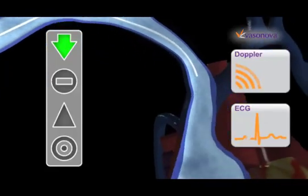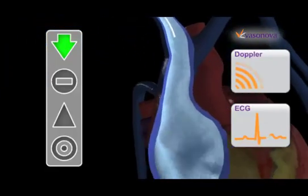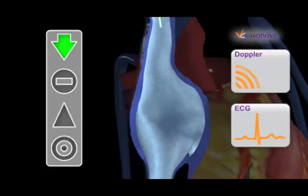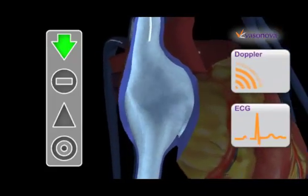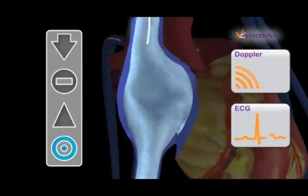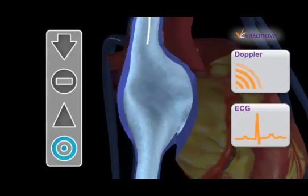Since a single physiological parameter might be impaired in certain patients, the Vasonova VPS is not dependent on just one parameter such as ECG to determine the location of the catheter tip. Instead, the Vasonova VPS uses multiple characteristics from multiple parameters to determine the location of the catheter tip.